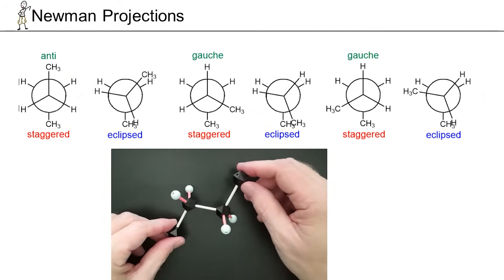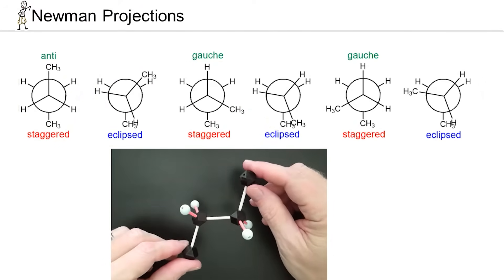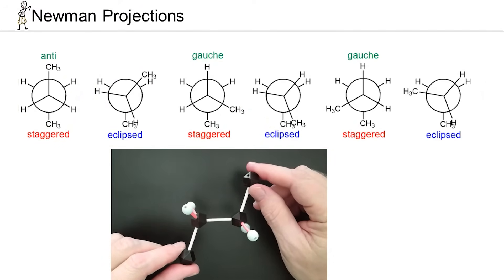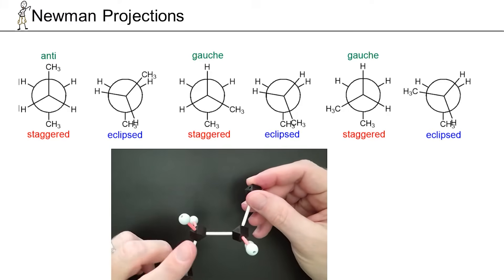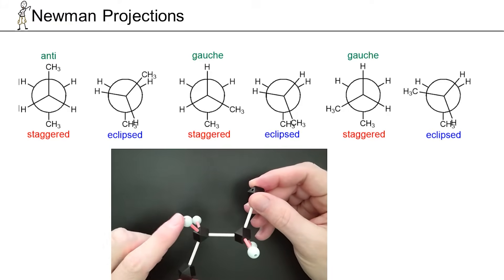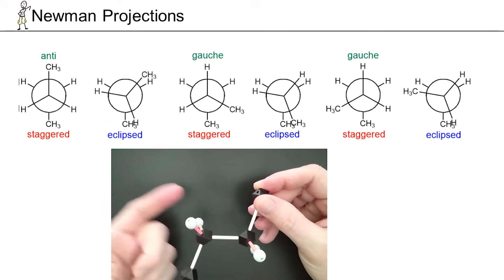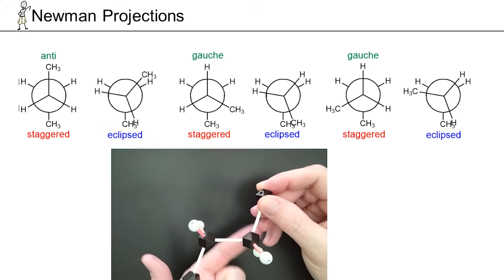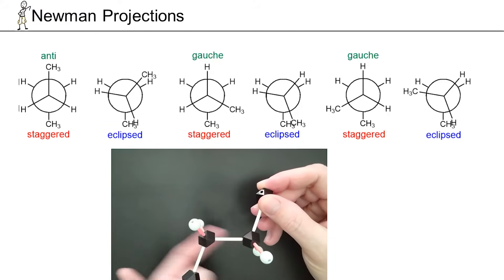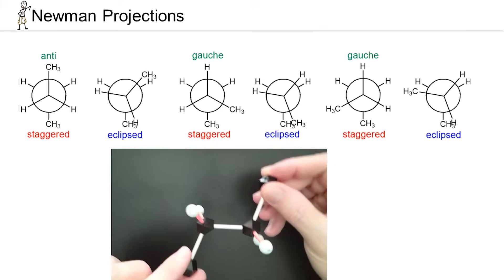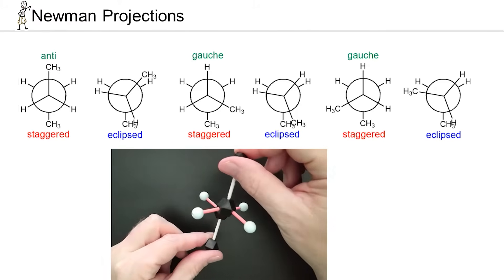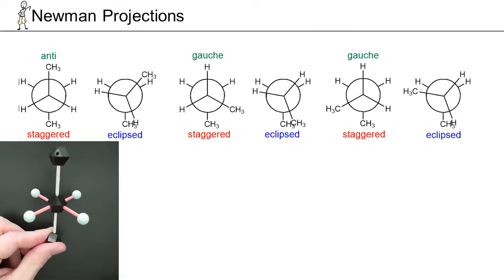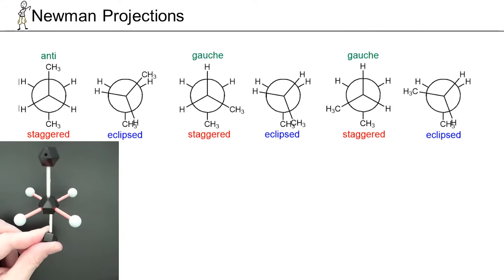If you're going to understand Newman Projections, I highly suggest you build a model similar to this one right here. Rather than looking at a normal perspective — where this hydrogen is coming out at you as a wedge, this one's coming out as a wedge as well, these two back ones correspond to dashes going away from you, and the methyl groups are both in the plane — we're going to turn this molecule 90 degrees and give ourselves a different perspective. This is the perspective we're looking at when we look at a Newman Projection.